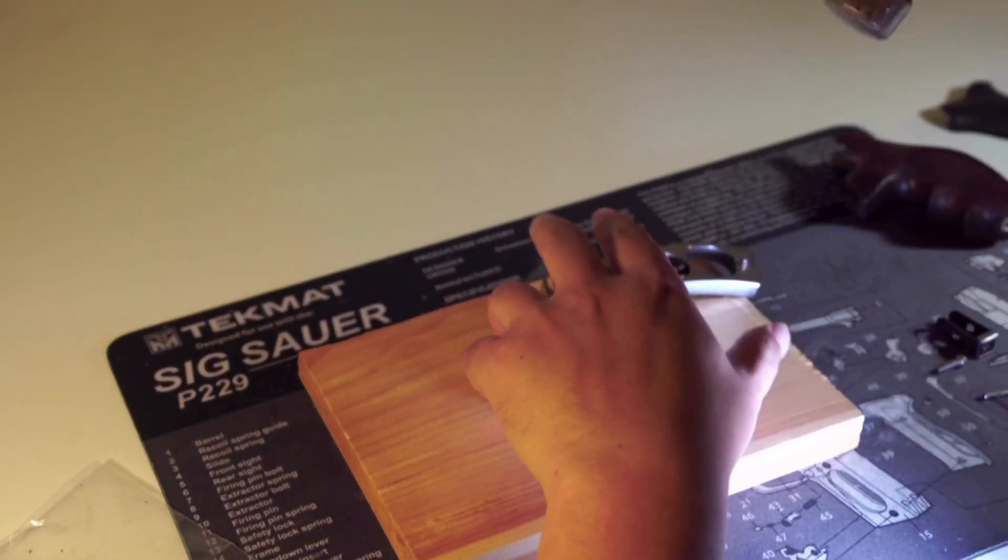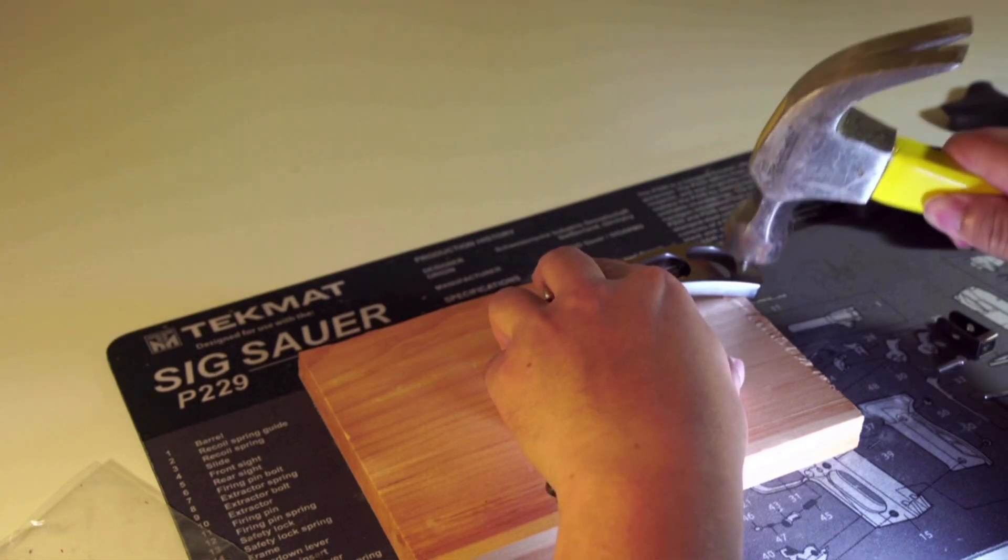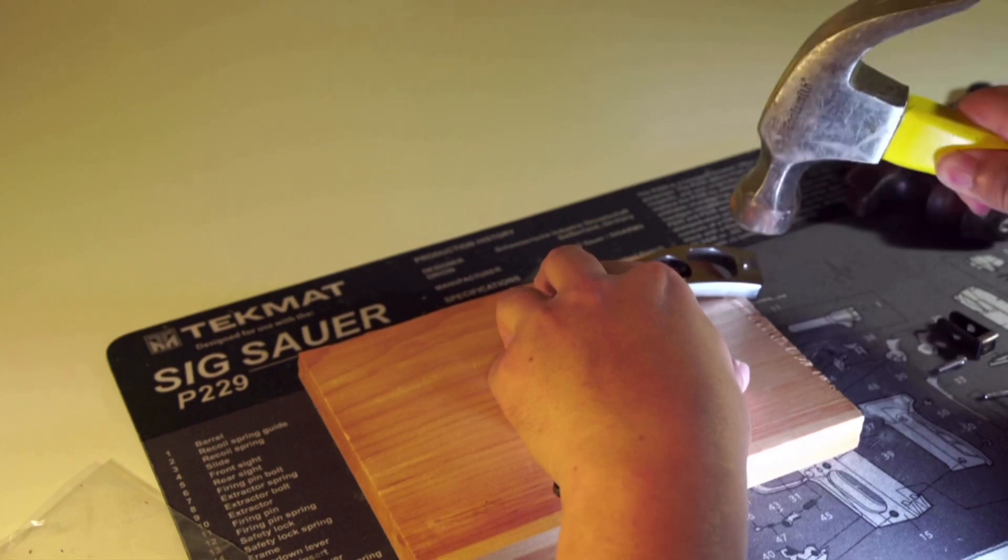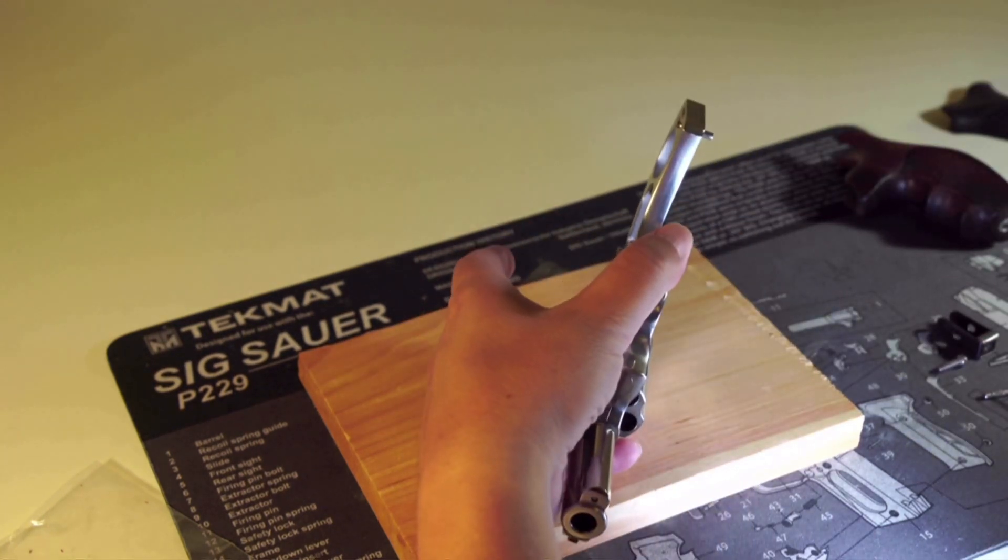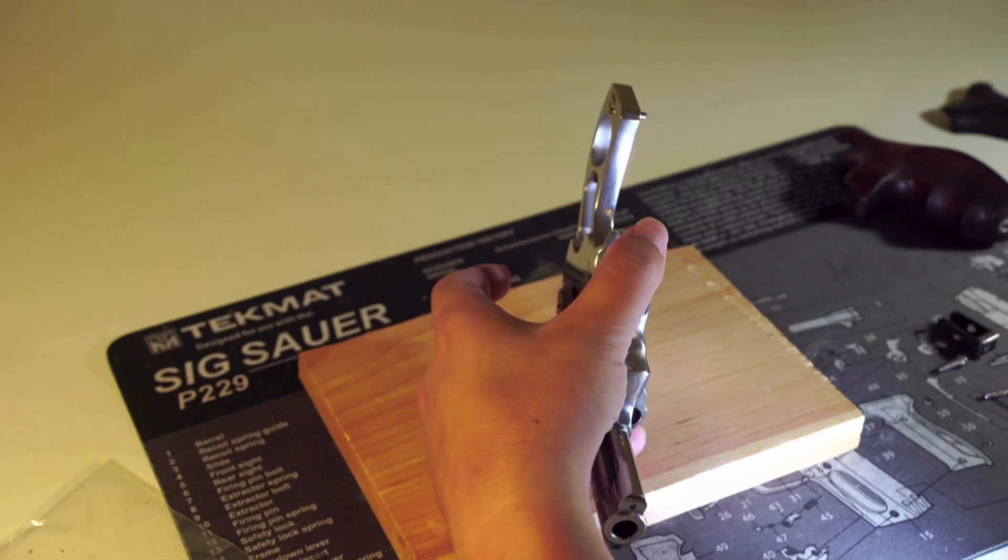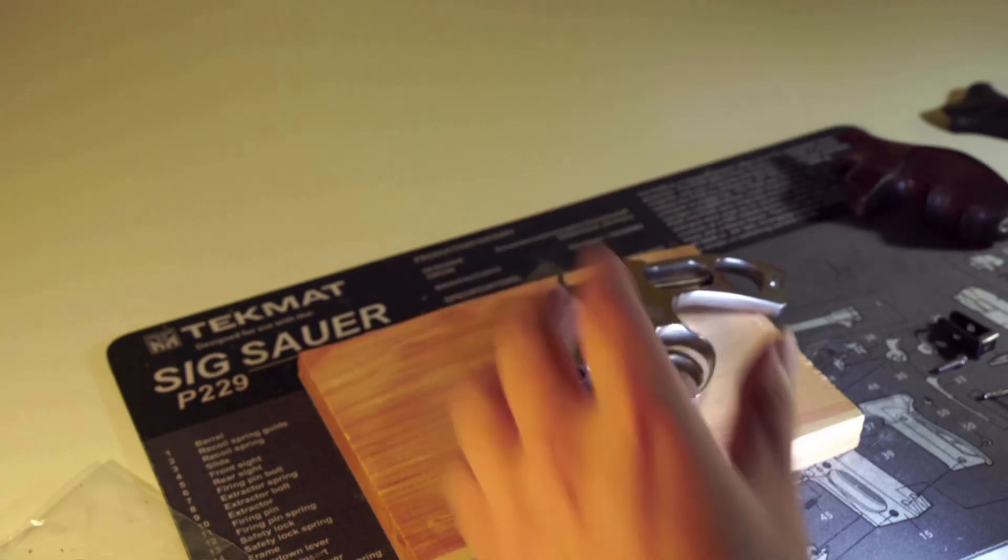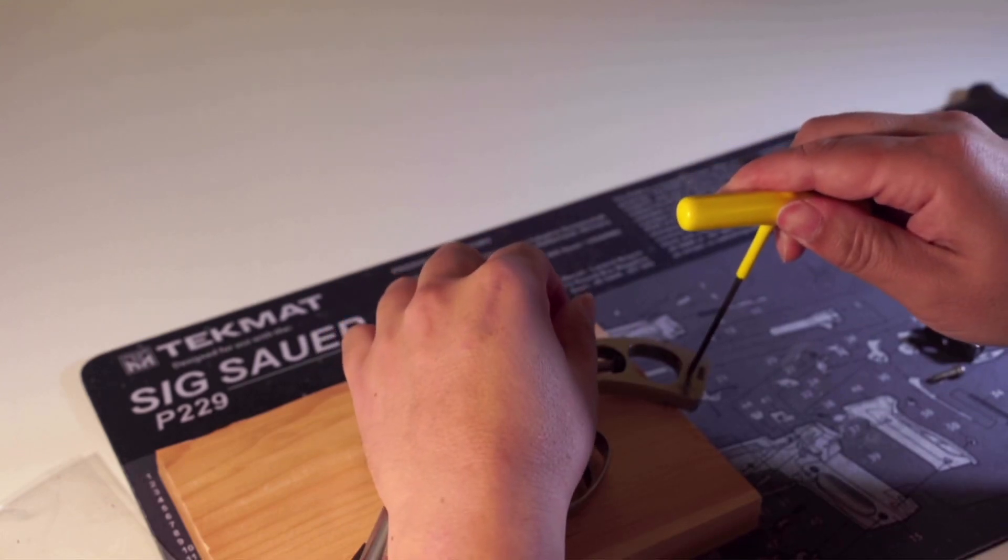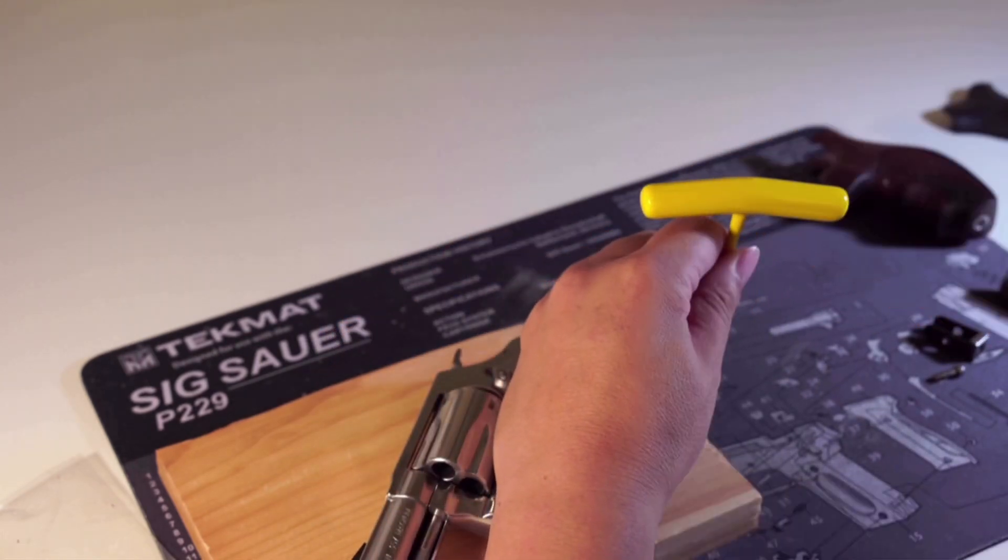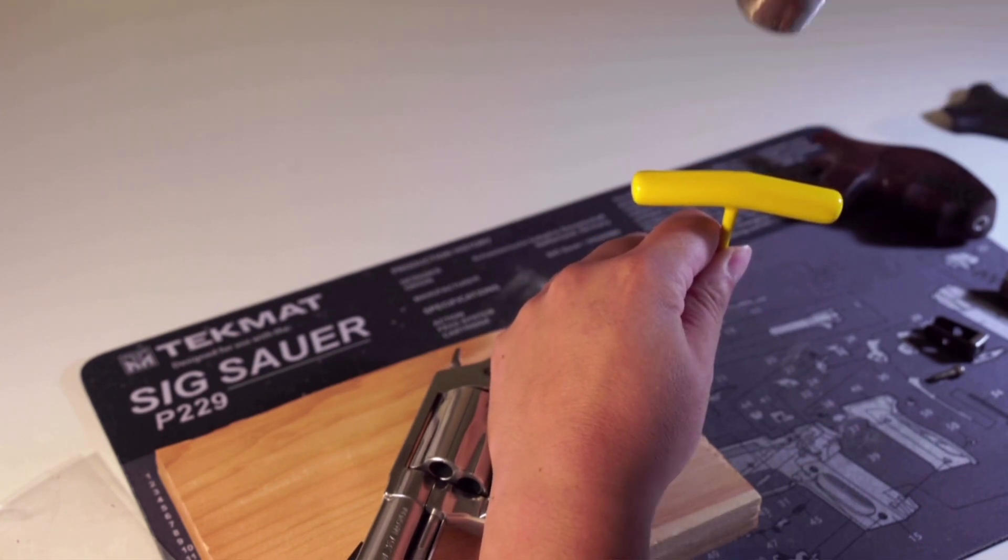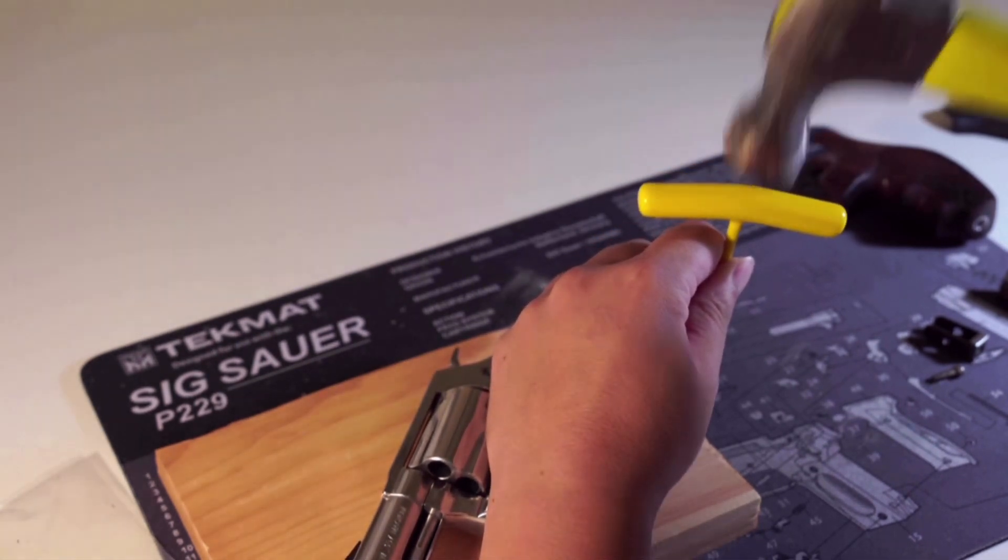To remove this pin, you need a hammer. Gently tap it. When one end is almost flat to the frame, you will need something to push it out until the pin falls off.